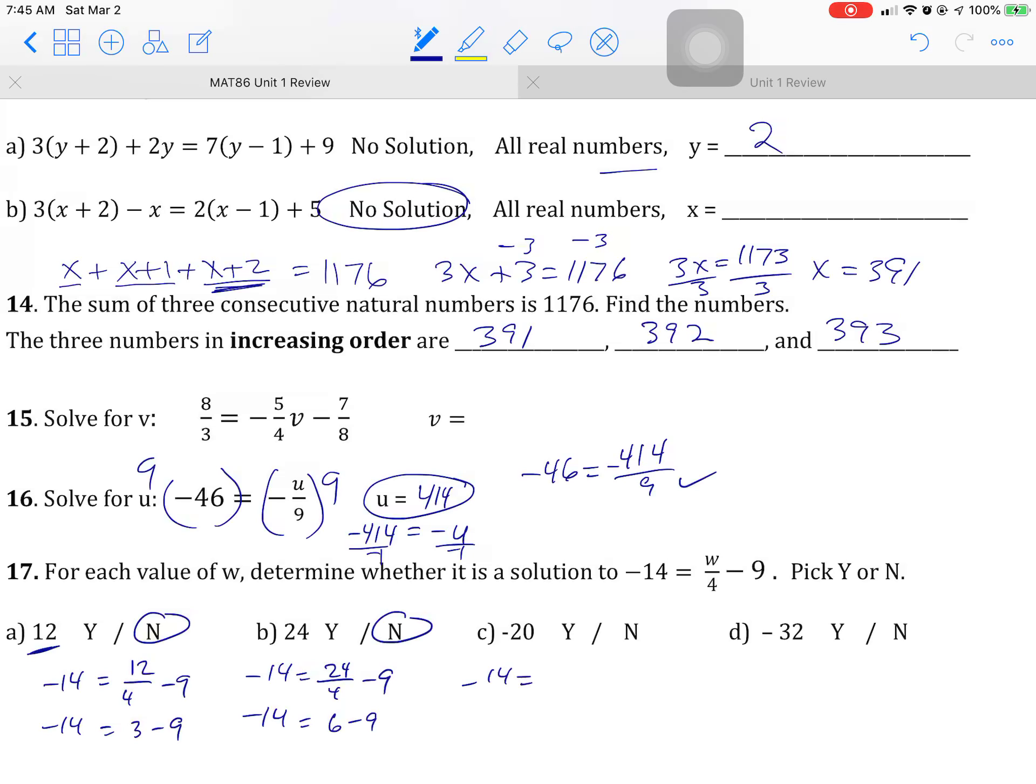Negative 14 equals negative 20 over 4 minus 9. Negative 14 equals negative 5 minus 9, which is a true thing, which is a yes. Negative 14 equals negative 32 over 4 minus 9. Well, this can't be true because the last one was true. So W can only be one thing. So this isn't going to work either.